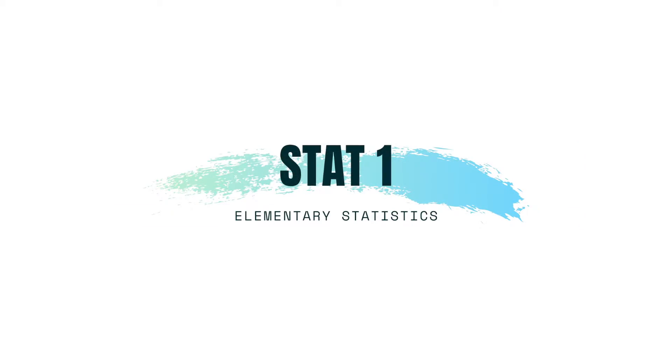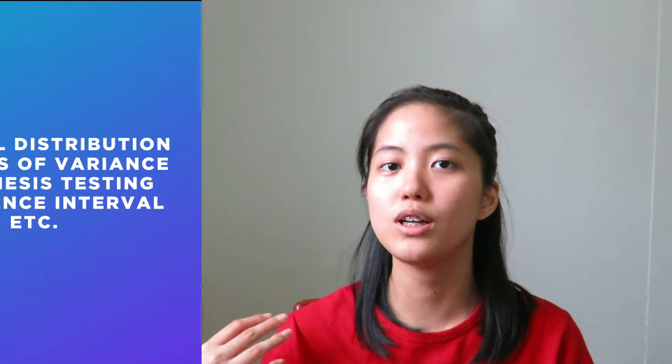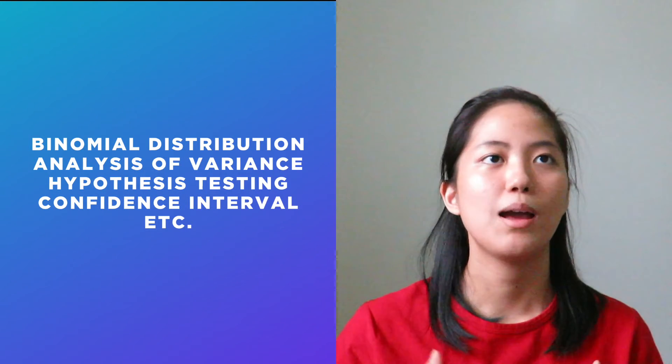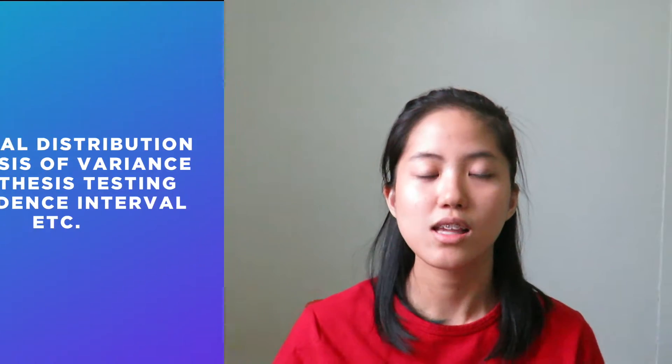The next subject has some overlap with COMSAI 57 in terms of probability and combinatorics. That subject is Elementary Statistics. We discussed binomial distribution, analysis of variance (ANOVA), hypothesis testing, and confidence intervals. That's what we covered in statistics.